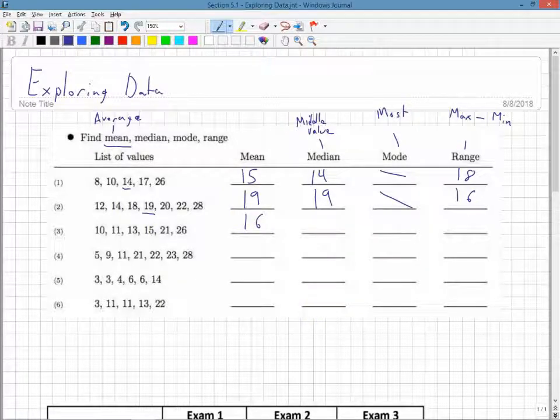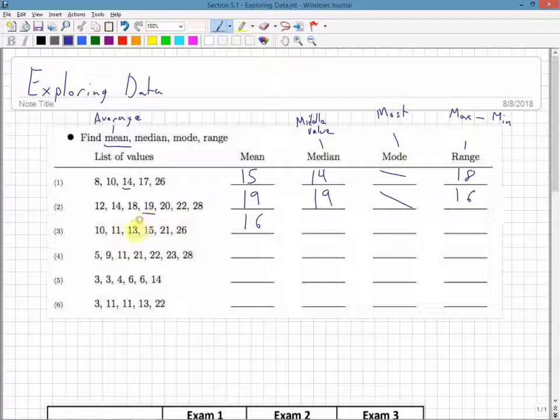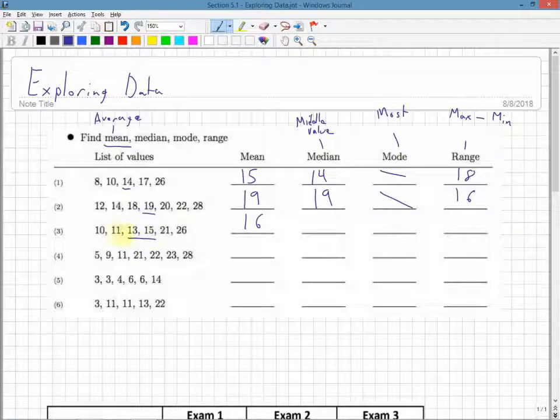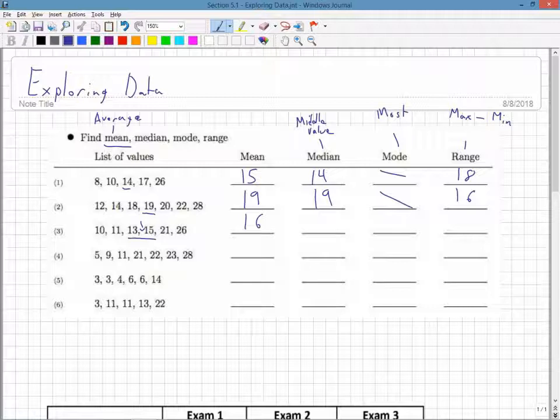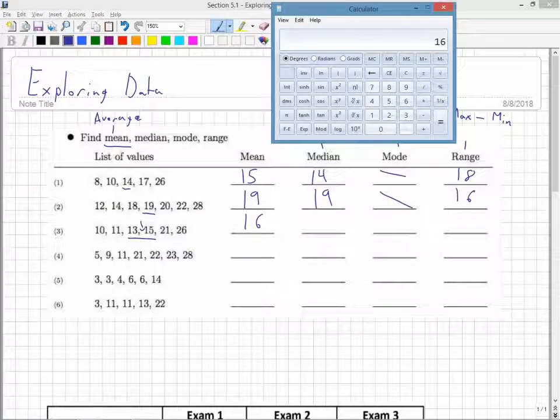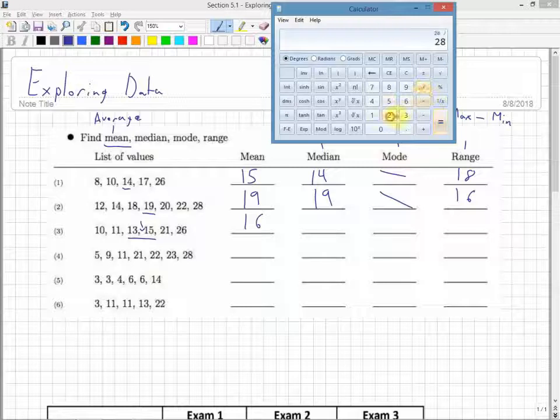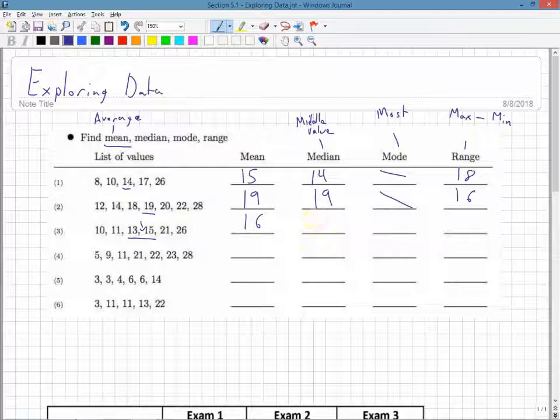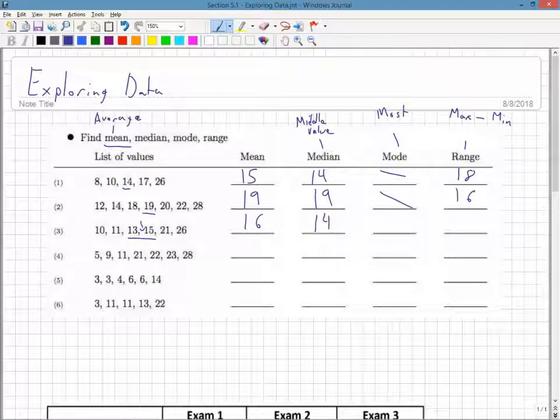The median value in this case, I'm going to have to take an average of the middle two. I have 1, 2 - these two are in the middle, the 13 and the 15, because I have two before and two after. The middle value would lie in between them. To find it, I take an average: 13 plus 15, divide by 2. The middle value is 14, so my median value is 14.